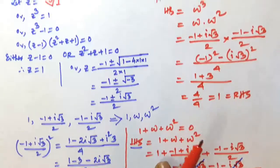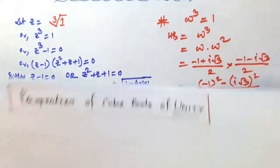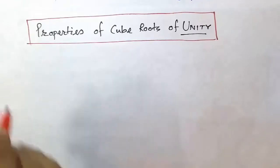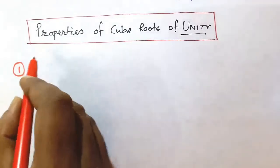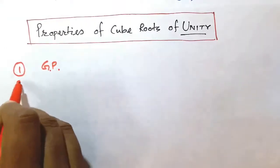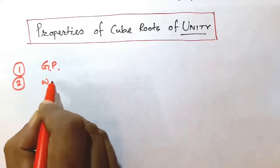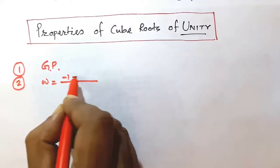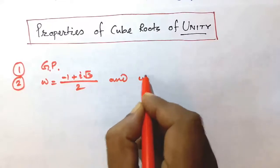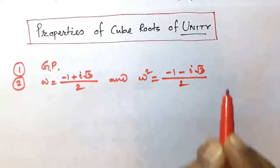Let us now sum up all the properties of cube roots of unity. First: the cube roots of unity are in GP. Second: the complex cube roots of unity are, respectively, minus 1 plus i root 3 whole divided by 2 and minus 1 minus i root 3 whole divided by 2.